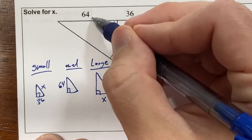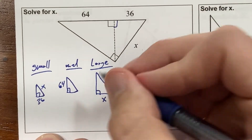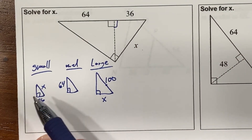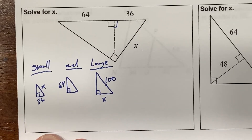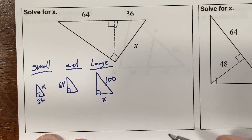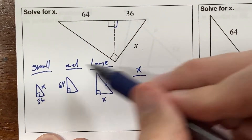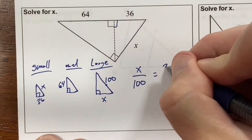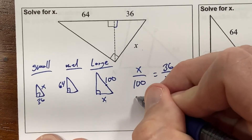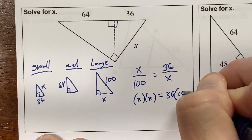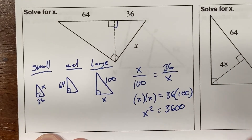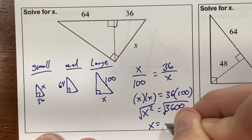The large triangle has a hypotenuse across from the right angle. It's two different numbers but the whole side — 64 and 36 — makes the hypotenuse 100. I match up the small and large triangles since both have their smallest sides and hypotenuse labeled: x over 100 equals 36 over x. Cross multiply: x squared equals 36 times 100, which is 3600. Taking the square root of both sides gives x equals 60.